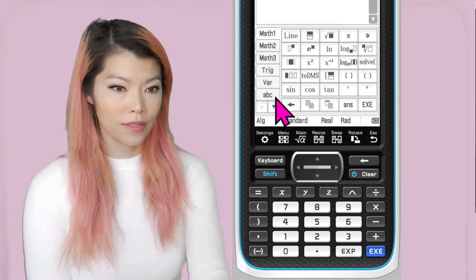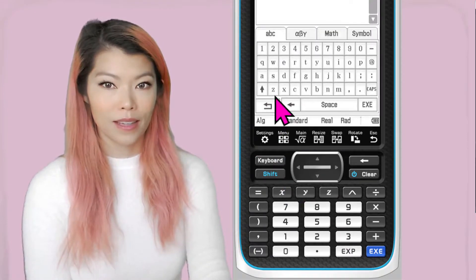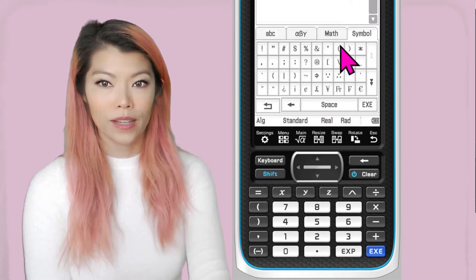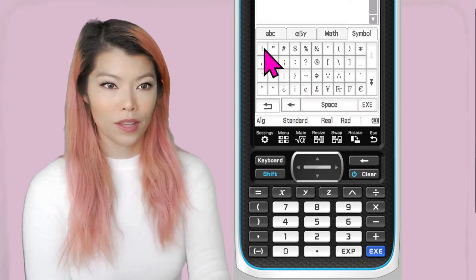So you go to Keyboard, go to ABC, Symbol and you can see the factorial sign over there.